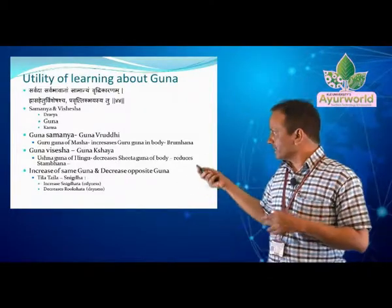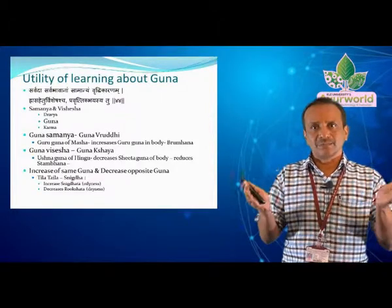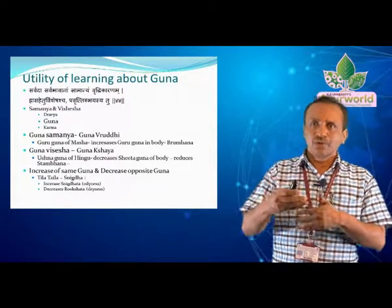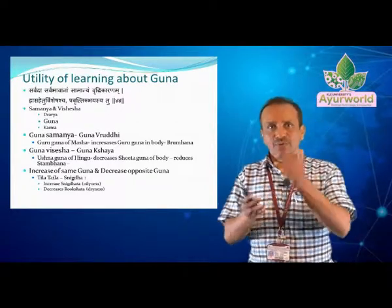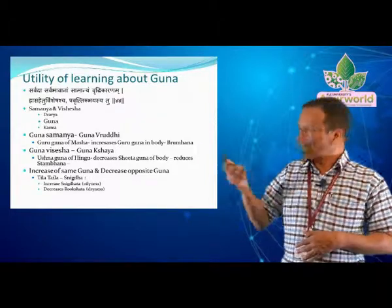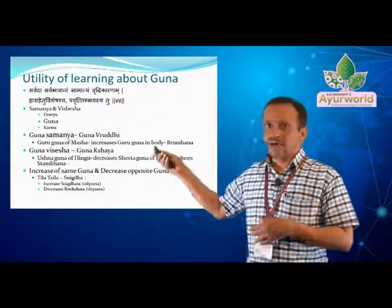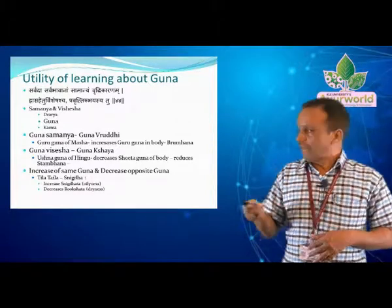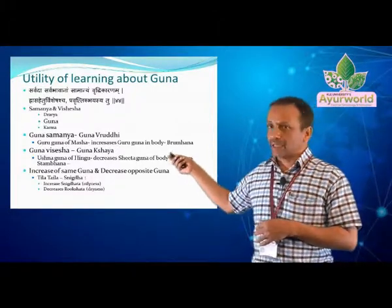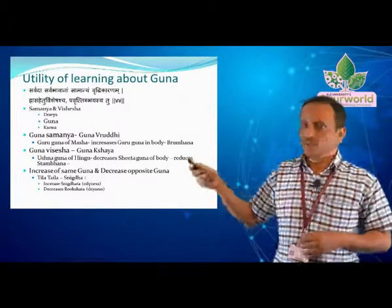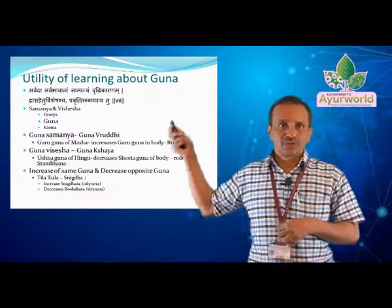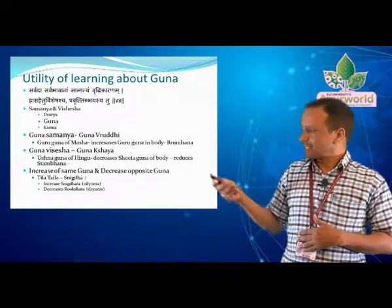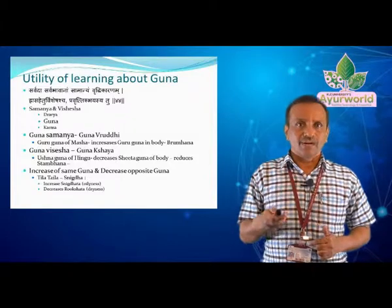In Gunas, there are opposite pairs. When we give one Guna, it is going to increase the same Guna and reduce the opposite pair. We can see in Tilakayla — Snigdha (oiliness) is present. When we give it, Snigdha increases and Rukshata (dryness) is reduced. So the opposite Guna decreases and Snigdha Guna increases. That's why these are very very important in our treatment.